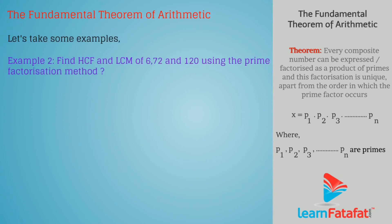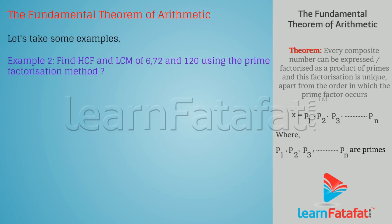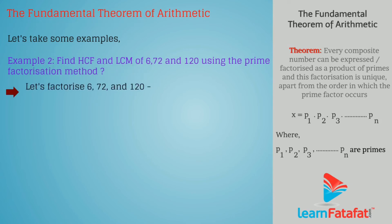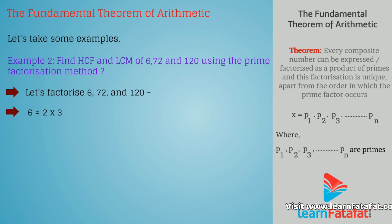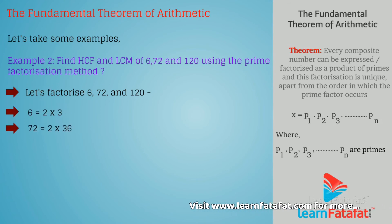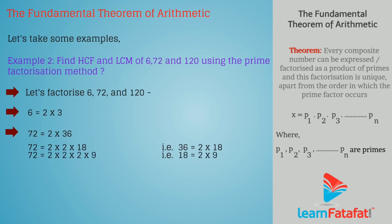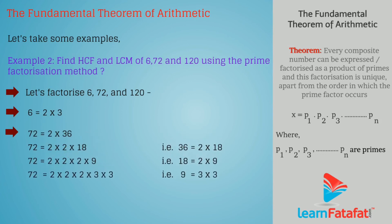Another example: find the HCF and LCM of 6, 72, and 120 using the prime factorization method. Let's factorize 6, 72, and 120. 6 can be factorized as 2 into 3. 72 can be factorized as 2 into 36. By simplifying 36, we get the factors of 72 as 2 cubed and 3 squared.